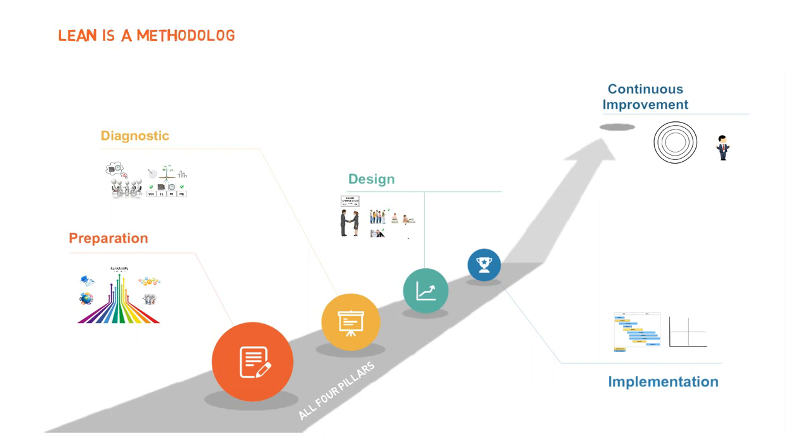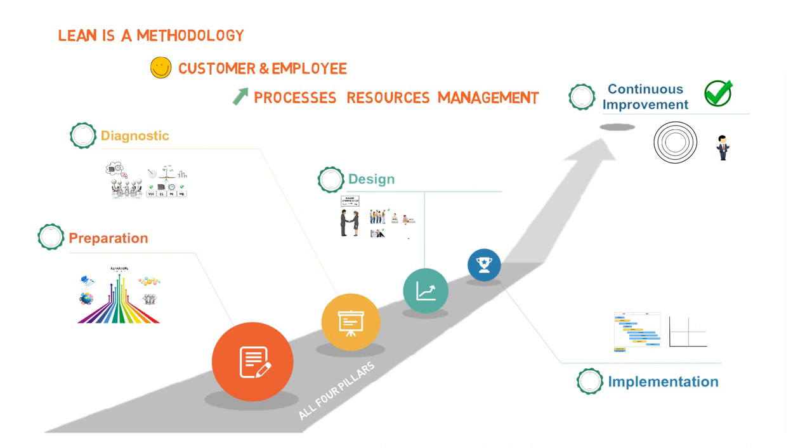Lean is a methodology that focuses on raising customer and employee satisfaction through improving the way processes are designed, resources allocated, and people managed. It has five different stages and the ultimate goal is to instill a continuous improvement mindset among all employees.